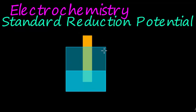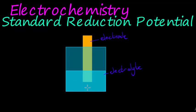A half cell is an electrode surrounded by an electrolyte solution. The electrolyte solution is an electrolyte in an aqueous solution. An electrolyte is something that ionizes in solution. In the solution we've got cations and anions. Cations are the important ones here, because cations would be pulling electrons from the electrode — that is called reduction. Reduction means to gain electrons.